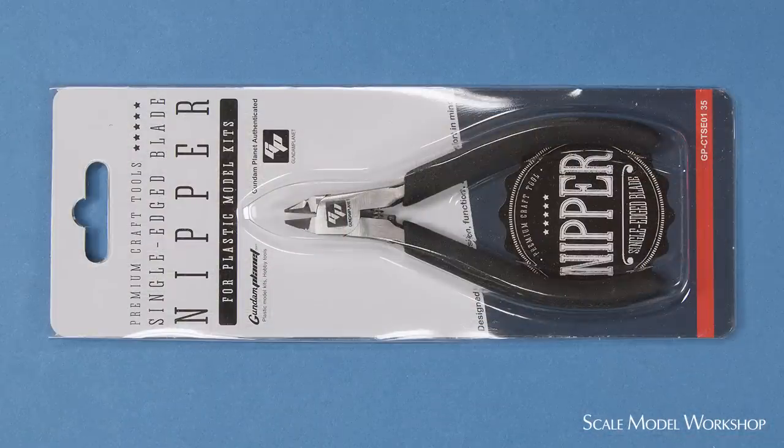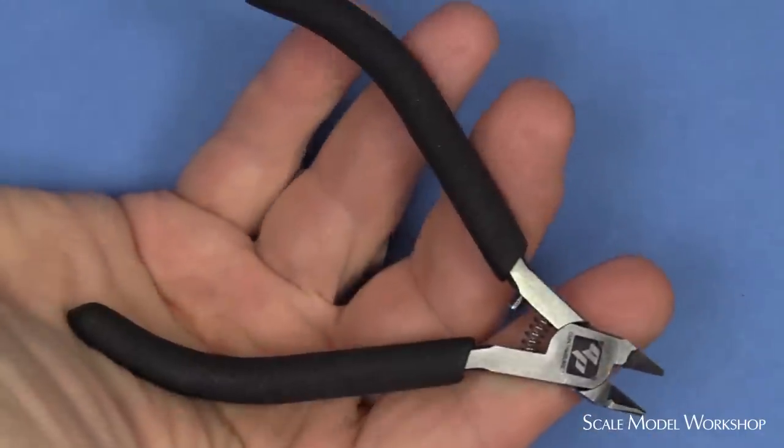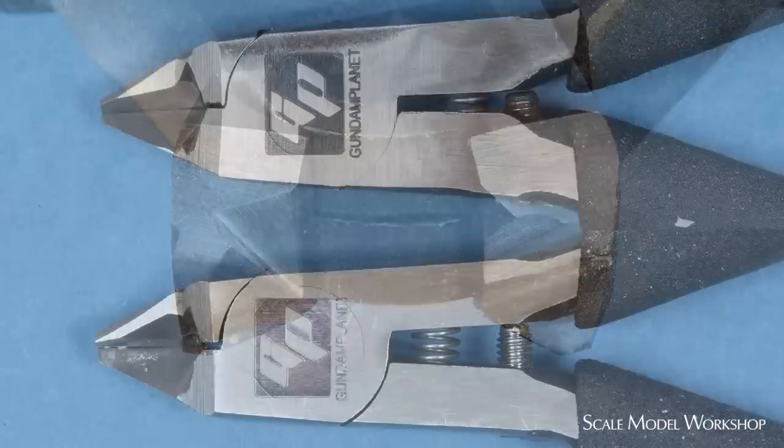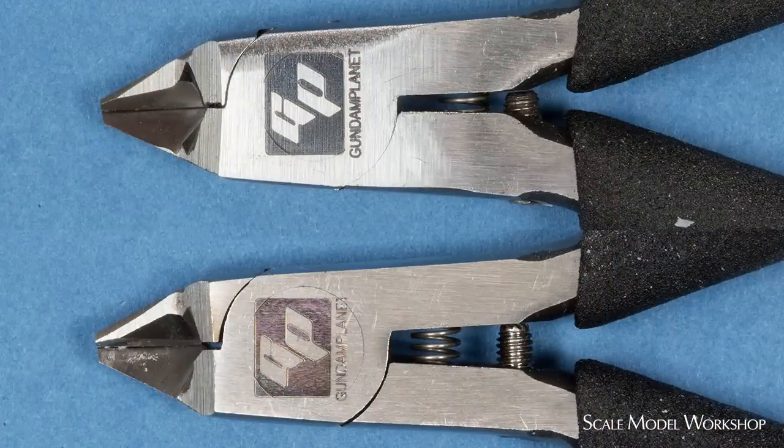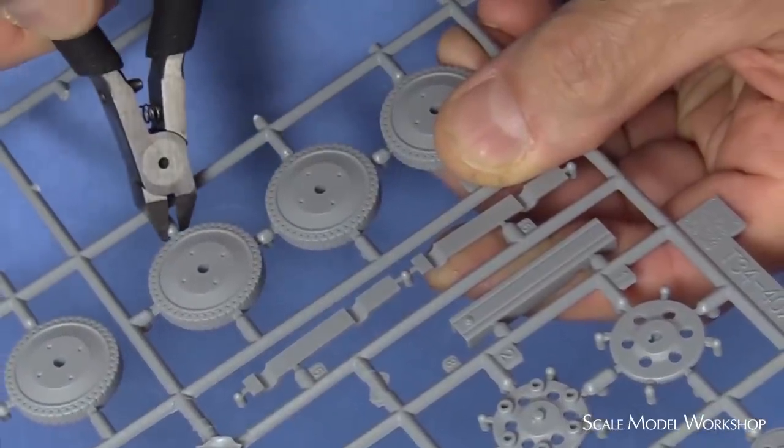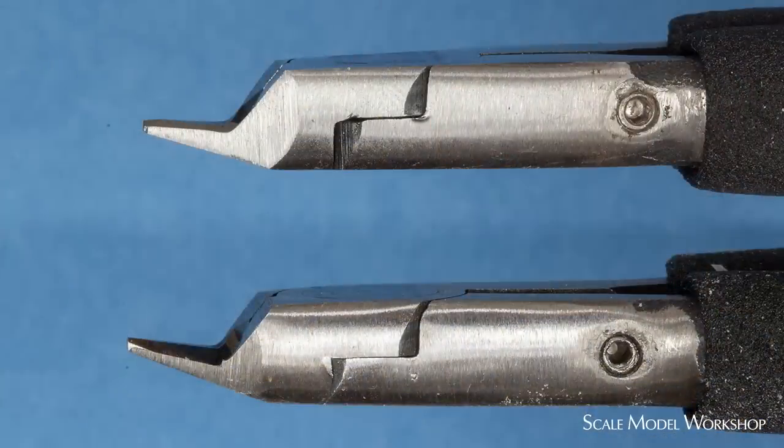The Gundam Planet nippers are sort of a bulkier version of the God Hand nippers, and they share the same single-edge design. But the execution's a bit hit and miss. And while they cut okay, the general finish and quality control is representative of their country of manufacture.